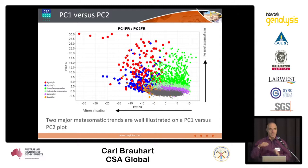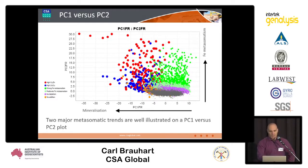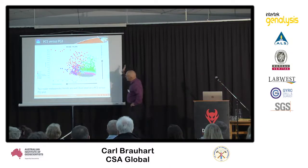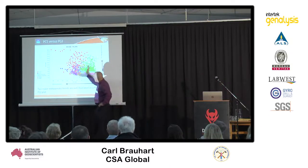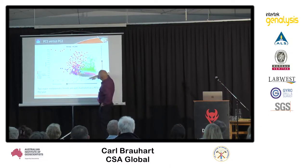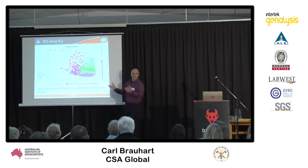Principal component seven actually separates out the copper from the lead-zinc. But just at the higher level, plotting principal component one versus two: negative PC1 scores are mineralisation, positive PC2 scores are chloride alteration.